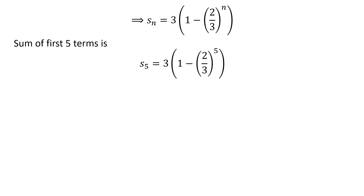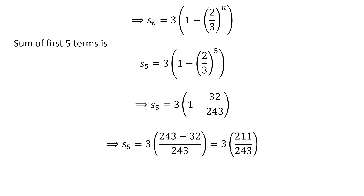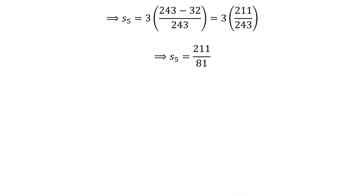So the sum of first 5 terms is equal to 3 times 1 minus 2 upon 3 raised to the power of 5. We know 2 raised to the power of 5 is equal to 32 and 3 raised to the power of 5 is equal to 243. So the sum is equal to 3 times 1 minus 32 upon 243, which equals 3 times 211 upon 243. Cancelling the common factor 3 gives us the sum of first 5 terms is equal to 211 upon 81.